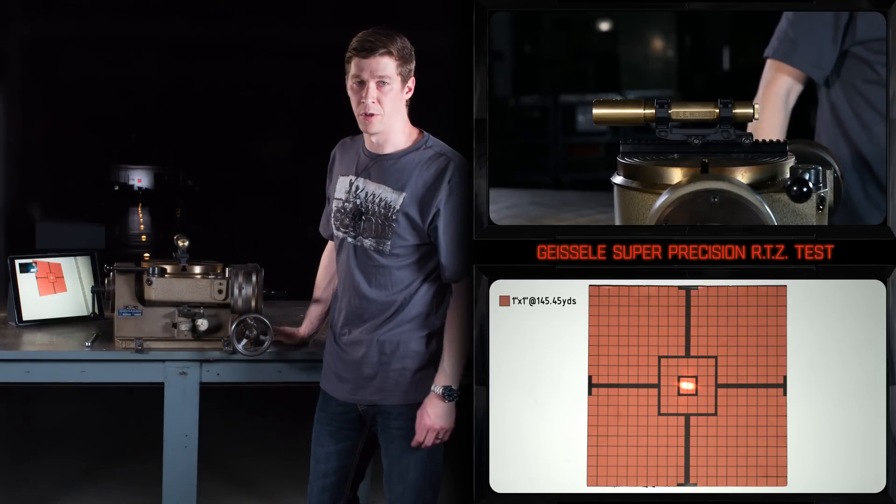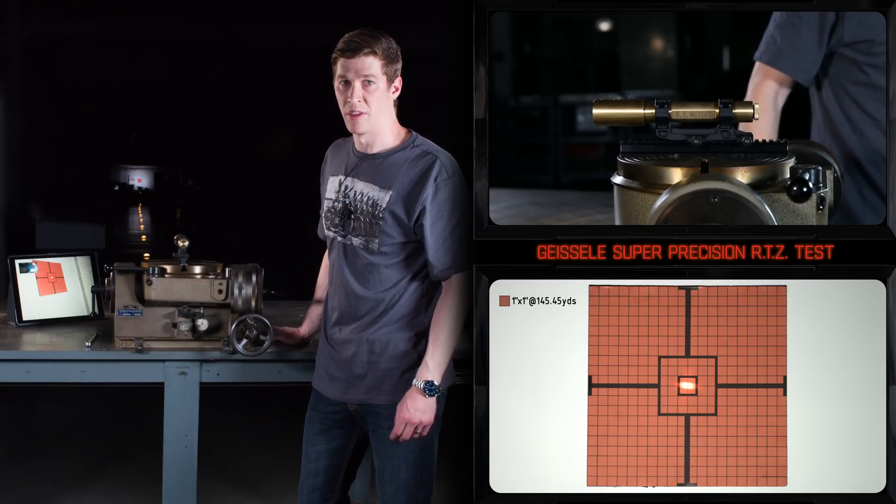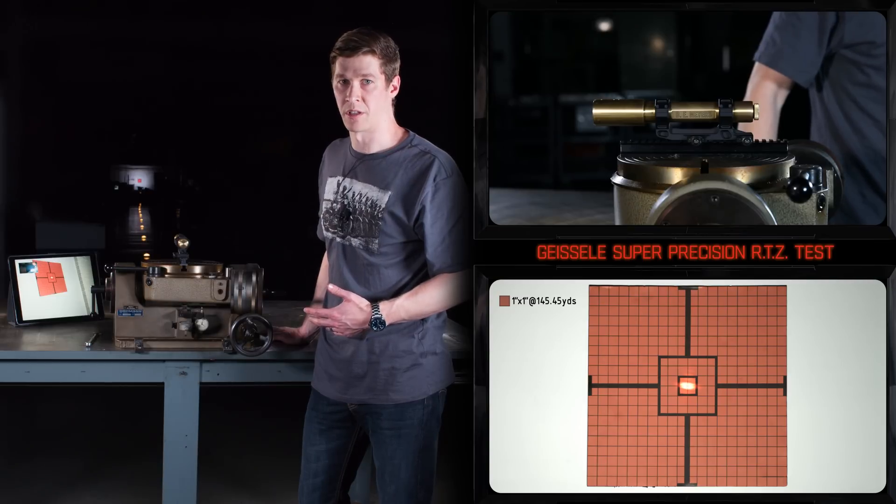There's the return to zero after using a half-inch box end wrench. This is why we call it the Super Precision line of optic mounts.